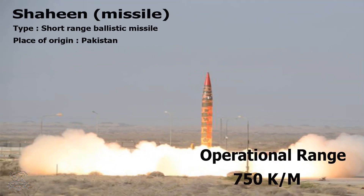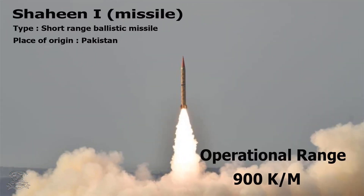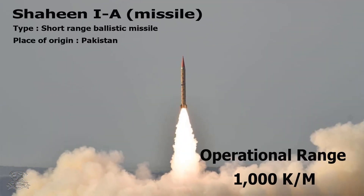Short Range Ballistic Missiles. Shaheen Missile: Type – Short Range Ballistic Missile, Place of Origin – Pakistan, Operational Range – 750 km. Shaheen-1 Missile: Type – Short Range Ballistic Missile, Place of Origin – Pakistan, Operational Range – 900 km. Shaheen-1A Missile: Type – Short Range Ballistic Missile, Place of Origin – Pakistan, Operational Range – 1,000 km.